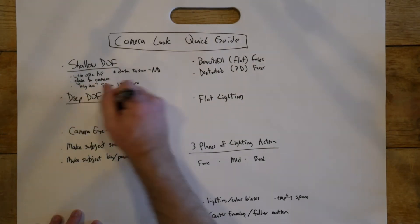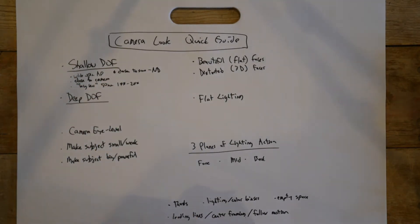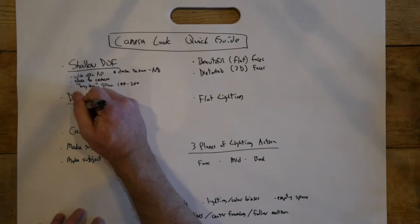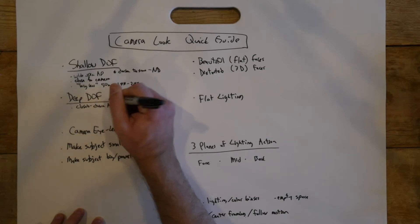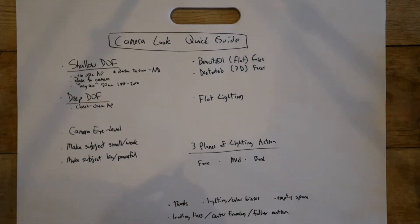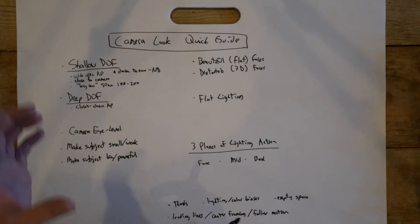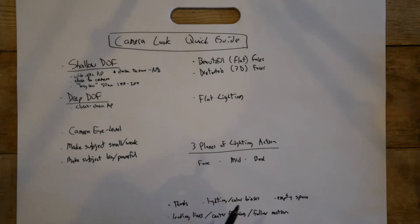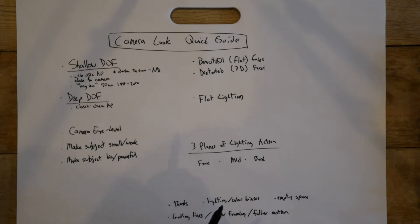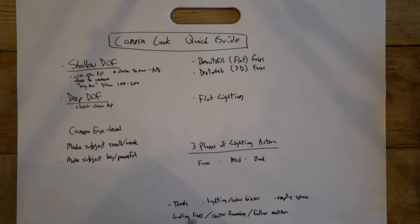Deep depth of field is the opposite — everything is in focus. You're going to want to close down the aperture. Any lens can basically achieve deep depth of field this way: a really fast f2 lens can be closed down to f8 or f16. Camcorders basically have deep depth of field because of the size of the sensor — they're just not capable of shallow depth of field, even when you zoom in.